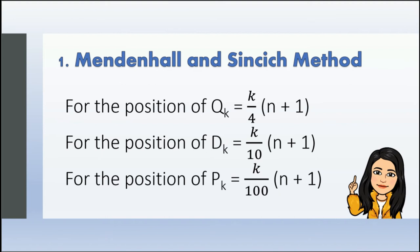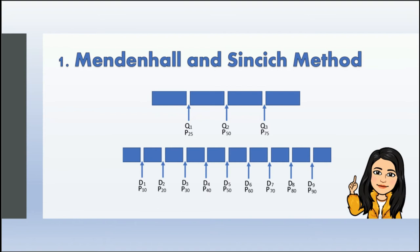An important note about the Mendenhall and Sincich method: if you are calculating measures of position that fall on the left side of the median — the median being quartile 2, decile 5, and percentile 50 — we round up. But if it falls on the right side, we round down.